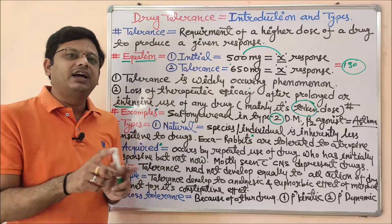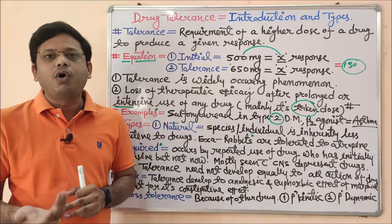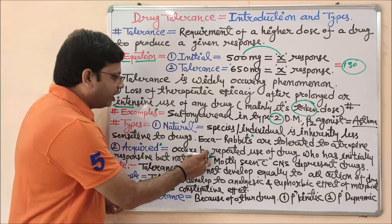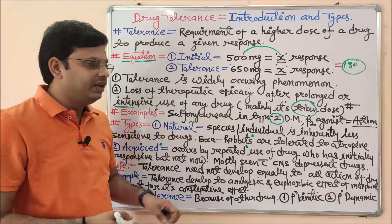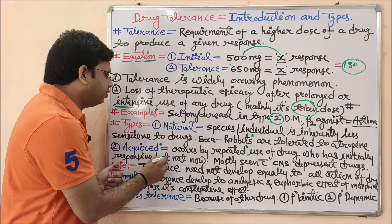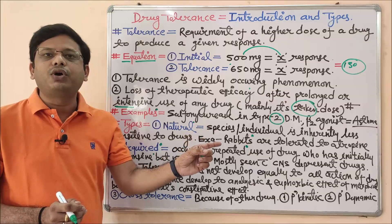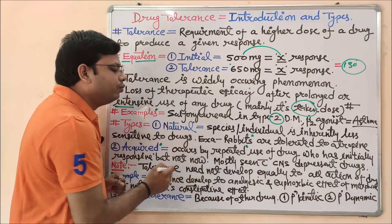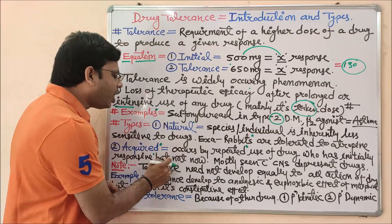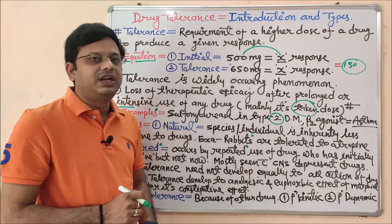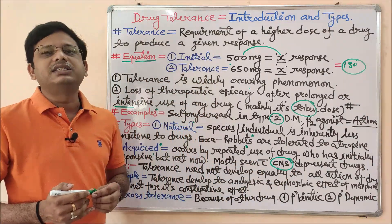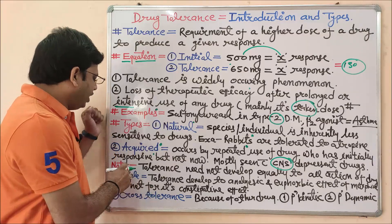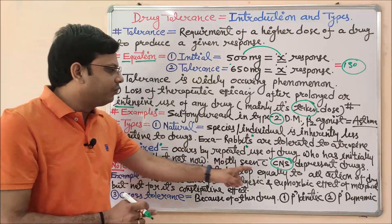Acquired tolerance means you develop it by doing some activity — such as taking different types of drugs frequently, regularly, or for a long duration of time. It occurs by repeated and frequent use of a drug that was initially responsive. Due to improper, irrational, or unethical use, the drug becomes tolerated and you need to take a higher concentration to achieve the same response. It is mostly seen with CNS depressant drugs.